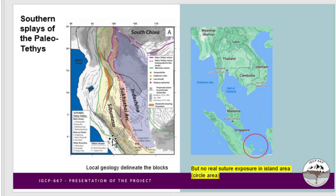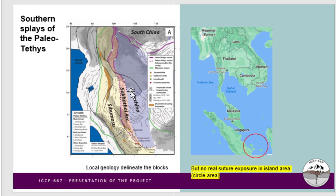Based on the local geology we can split this area into two main blocks. One is Sibumasu — 'Si' represents Siam which is Thailand, 'Bu' represents Burma which is Myanmar, 'Ma' represents Malaysia, and 'Su' represents Sumatra — so the geology here is different from the Indochina block. The Sukhothai arc is a volcanic arc sitting between Indochina and Sibumasu, and its formation is strongly associated with the consumption of the Paleotethys Ocean.